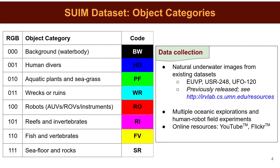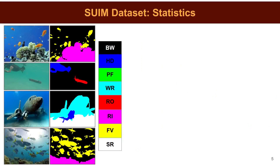We also include pixel annotations for human divers, robots, and seafloor, which are important in human-robot cooperative applications. The images are chosen from large-scale datasets named UVP, USR248, and EUFO120, which we previously proposed for underwater image enhancement and super-resolution tasks. We collected these natural underwater images through numerous oceanic explorations and field trials, and also from publicly available online resources such as YouTube and Flickr.